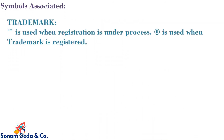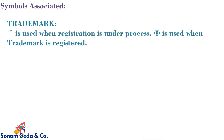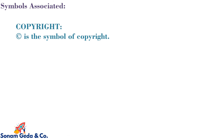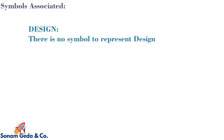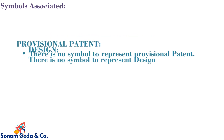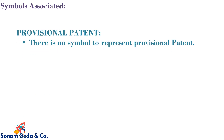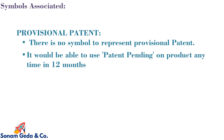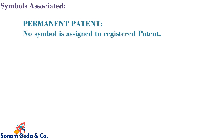Symbols associated: In case of trademark, the TM symbol is used when registration is under process, and the R symbol is used when the trademark is registered. In case of copyright, the C symbol is the symbol of copyright. There is no symbol to represent design. In case of provisional patent, there is no symbol, but one may use 'patent pending' on the product anytime within the 12 months. In case of permanent patent, no symbol is designated to represent a registered patent.